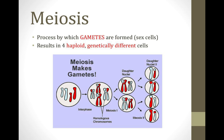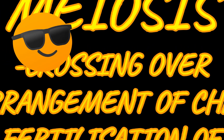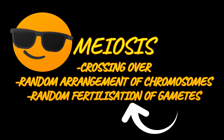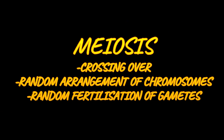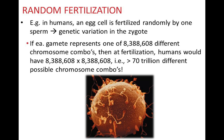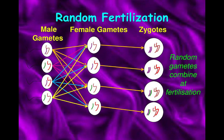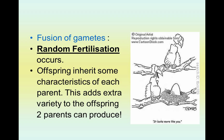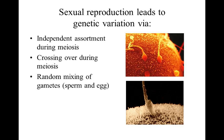Another contributing factor during meiosis is the random fertilization of gametes. The egg cells and sperm cells produced by meiosis are different from each other. Since there is random fertilization of these different gametes, there will be different combinations of genetic material in the offspring. So, random fertilization of gametes also contributes to variation within a species.